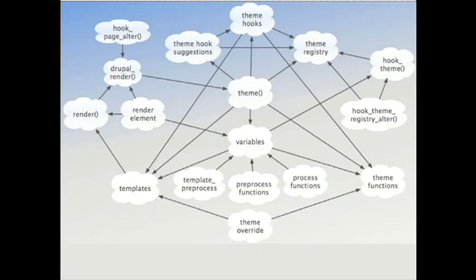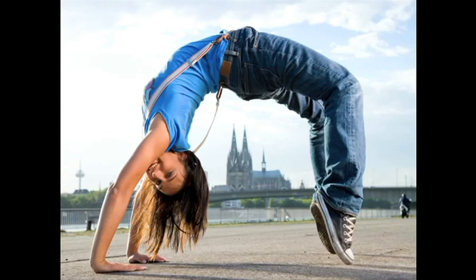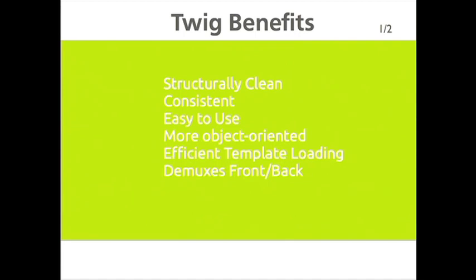We have a new system that is now in Drupal 8 core for theming — it's Twig. Twig effectively gives you the flexibility to bend over backwards when Drupal asks you to. It's a templating engine that is structurally clean and consistent. There is a consistent way of doing things. You don't have to try to guess where things are coming from or figure out when you're printing versus rendering. It's easy to use, more object-oriented, not legacy procedural spaghetti.